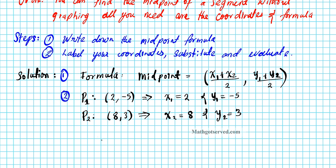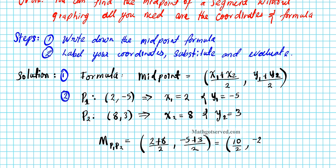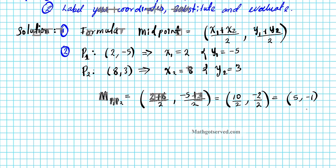Now we've listed everything we need so we don't make mistakes when plugging into the formula. The midpoint M of P1P2 is given by x1 plus x2 over 2, so 2 plus 8 over 2, and y1 plus y2 over 2, so negative 5 plus 3 over 2. Using order of operations: 2 plus 8 is 10, divided by 2. Negative 5 plus 3 is negative 2, over 2. Simplified: 10 over 2 is 5, negative 2 over 2 is negative 1. Our answer, 5 comma negative 1, is option number 4.